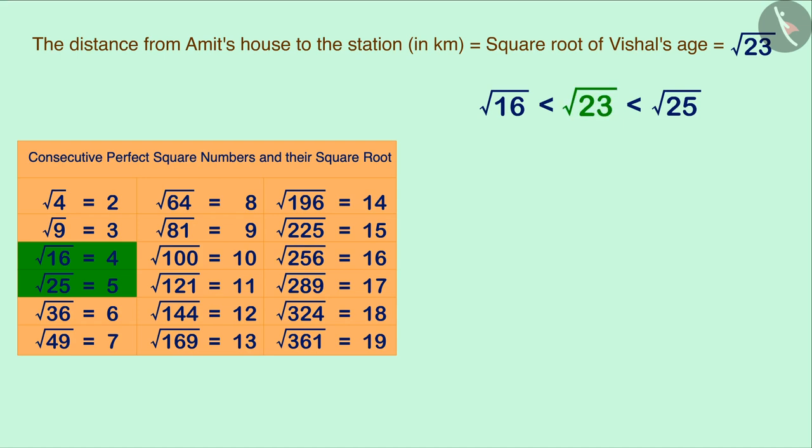Therefore, the square root of 23 will also be between the square roots of these two numbers. The square root of 16 is 4 and the square root of 25 is 5. This means that the square root of 23 will fall between 4 and 5.